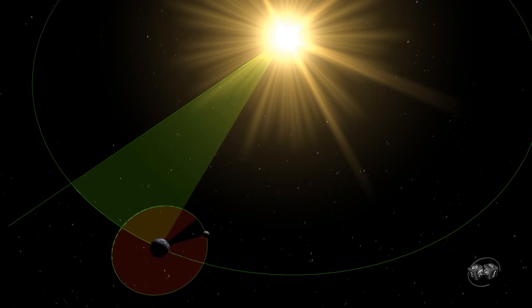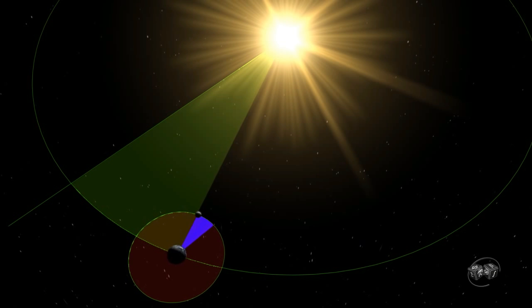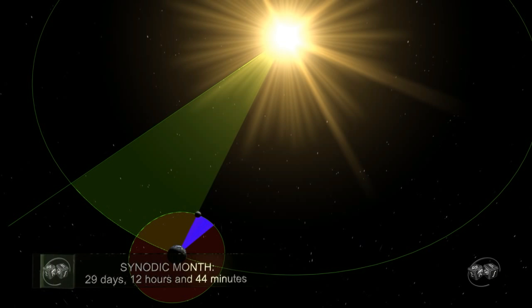The Moon must travel more than 360 degrees so that the three bodies line up again and so fulfill the cycle of the phases of the Moon. This cycle is called the synodic month, equivalent to 29 days, 12 hours and 44 minutes.